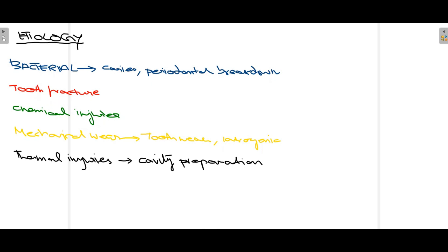Next is tooth fracture. Sometimes horizontal or vertical tooth fracture can expose the pulp. In vertical fractures, the only treatment available in most cases is extraction, but in horizontal fractures the pulp can be exposed and root canal therapy can sometimes be performed. There are also chemical injuries where very acidic agents used on teeth can lead to pulp inflammation. Fourth, mechanical wear — including attrition, erosion, and abrasion — and sometimes the dentist may accidentally expose the pulp during cavity preparation, which also includes thermal injuries.